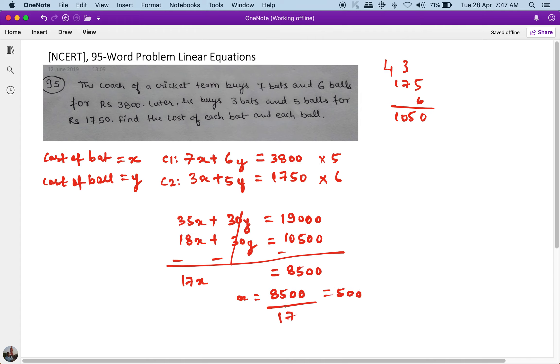So condition two, C2, is 3x plus 5y equals 1750. So 3 times 500 plus 5y equals 1750, which is 1500 plus 5y equals 1750.